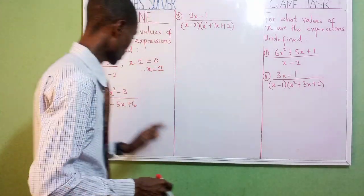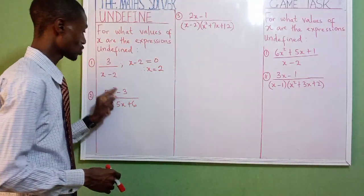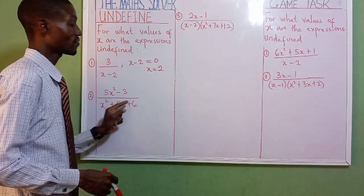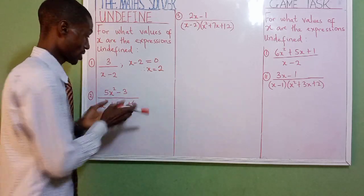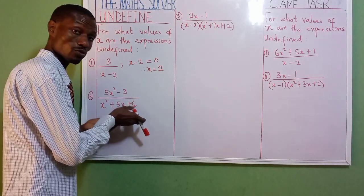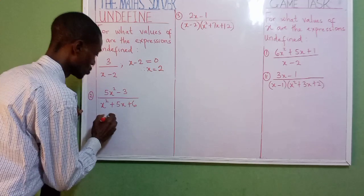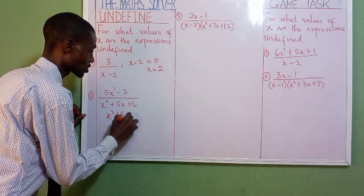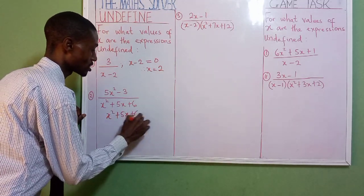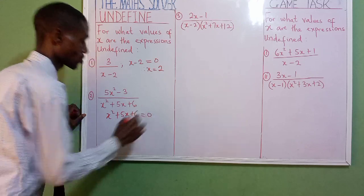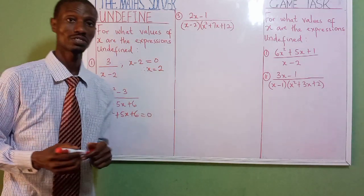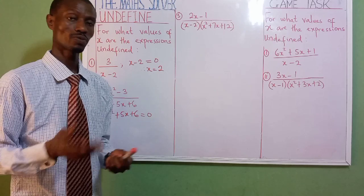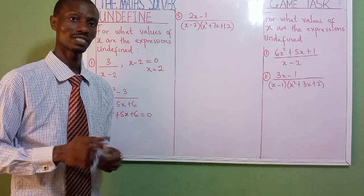Let's go to the second one. We have five x squared minus three, divided by x squared plus five x plus six. As I told you, the denominator gets set to zero. So you have x squared plus five x plus six equals zero.